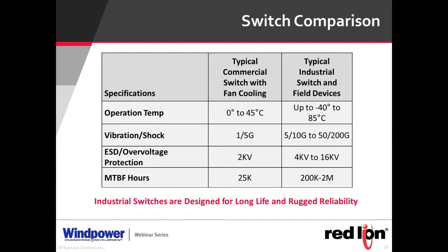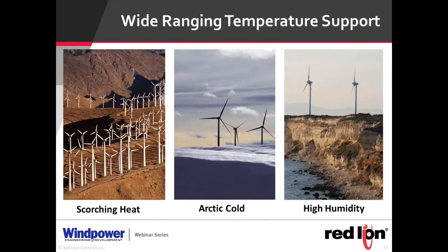Industrial switches are also designed to handle ESD or over-voltage protection, which is important since wind turbines are high in the air and exposed to lightning, and you're in an area producing power where there will be voltage variance. The mean time between failure is also significant: commercial switches are rated at 25,000 hours — less than 3 years predicted life — whereas a typical industrial switch is designed to last up to 20 years or more. They're designed for rugged environments, long life, and reliability.